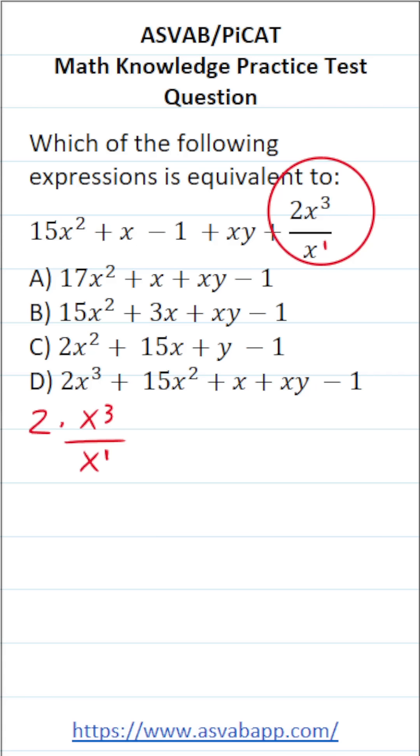And what law of exponent are we going to use to simplify this? We're going to use the quotient rule, which says if you have a to the m over a to the n, that's equal to a to the m minus n. That is to say you subtract our exponents.